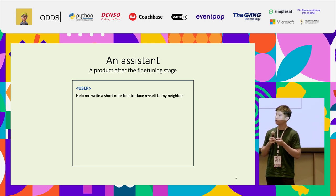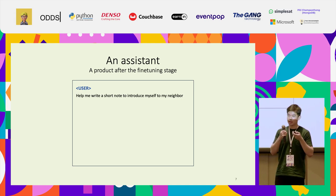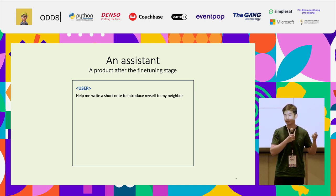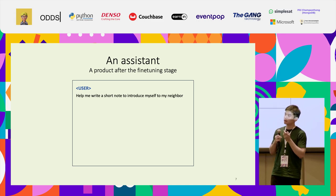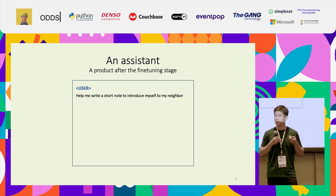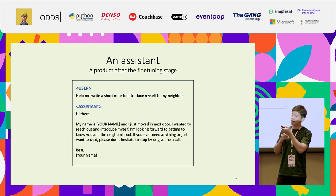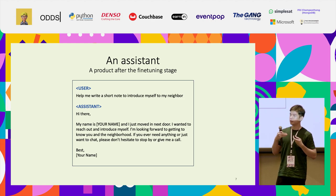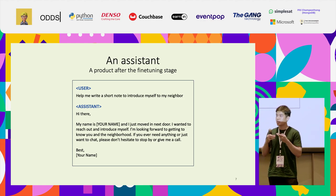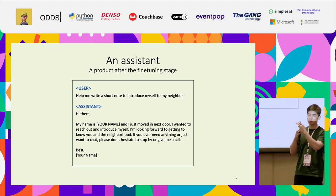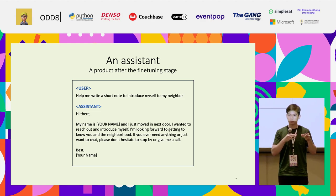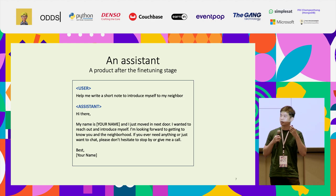This produces responses that align with what humans expect. After fine-tuning and that optional stage, we get what's called an assistant model, which is the same model available through the OpenAI API. For a straightforward question like 'help me write a short note to introduce myself to my neighbor', GPT-4 can provide a template. Even if this exact example never appeared in training data, the assistant uses its internal knowledge to come up with an answer that seems meaningful and correct.